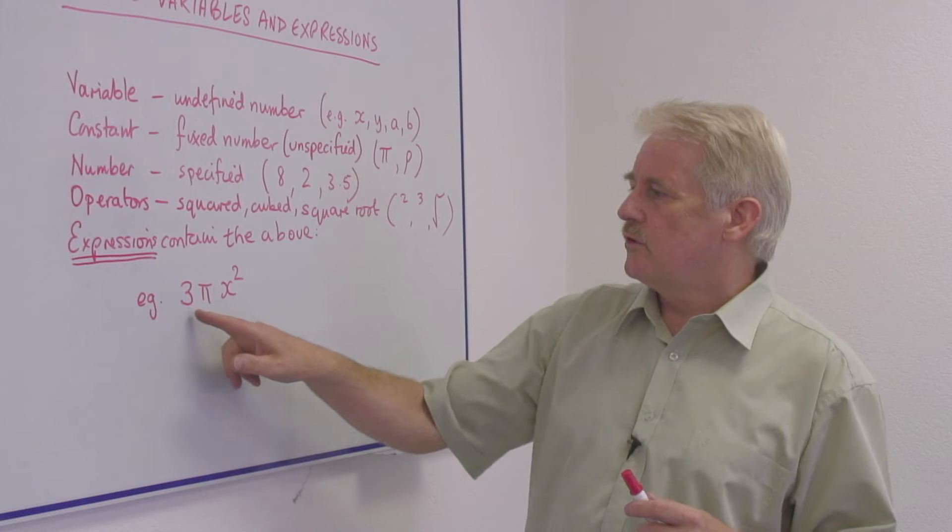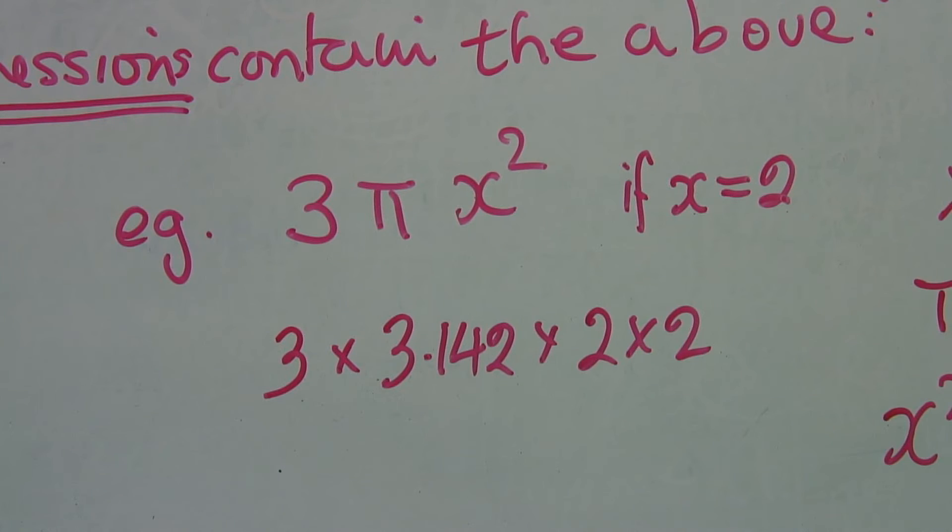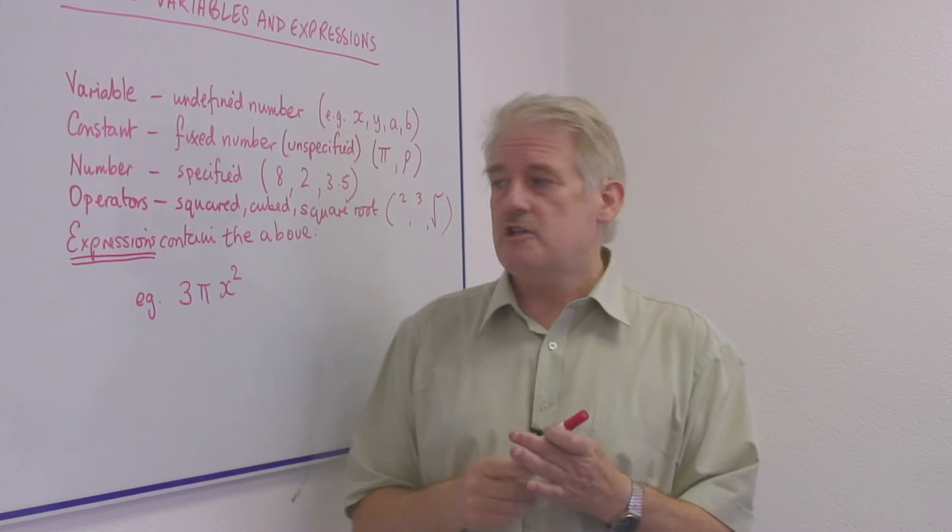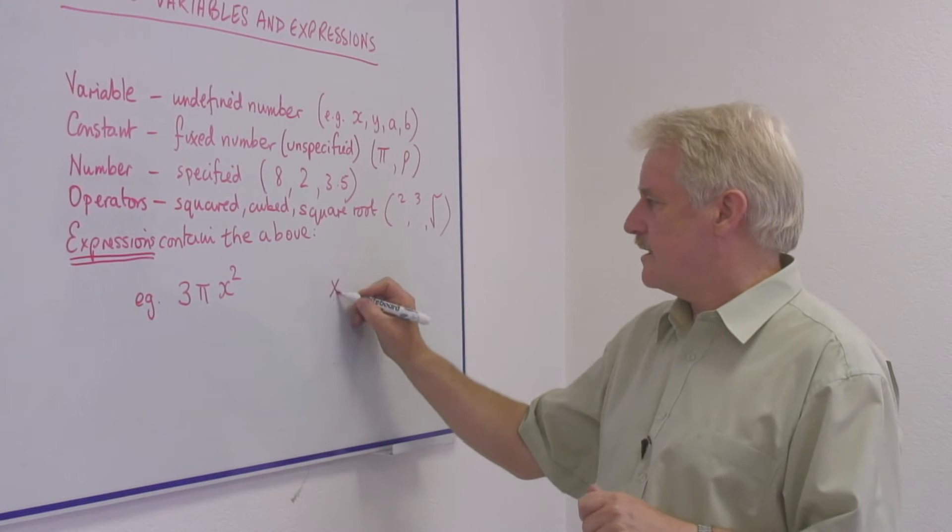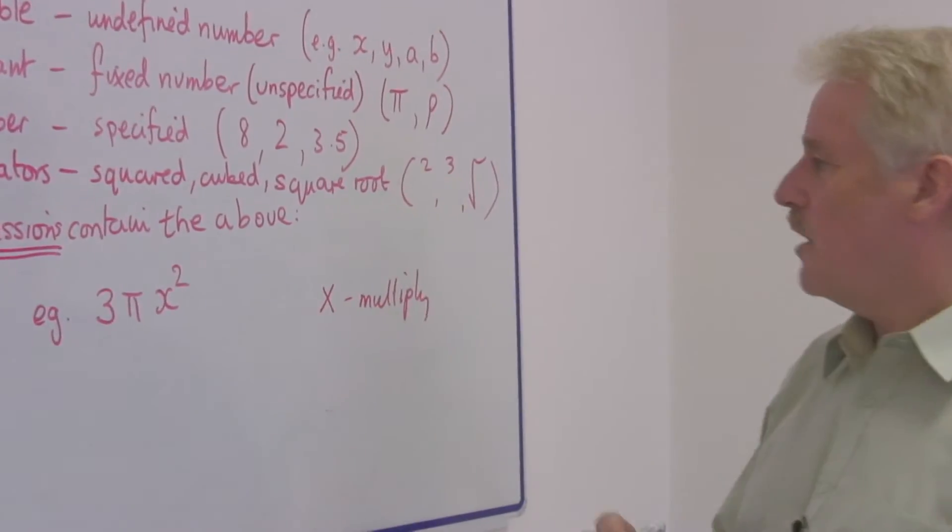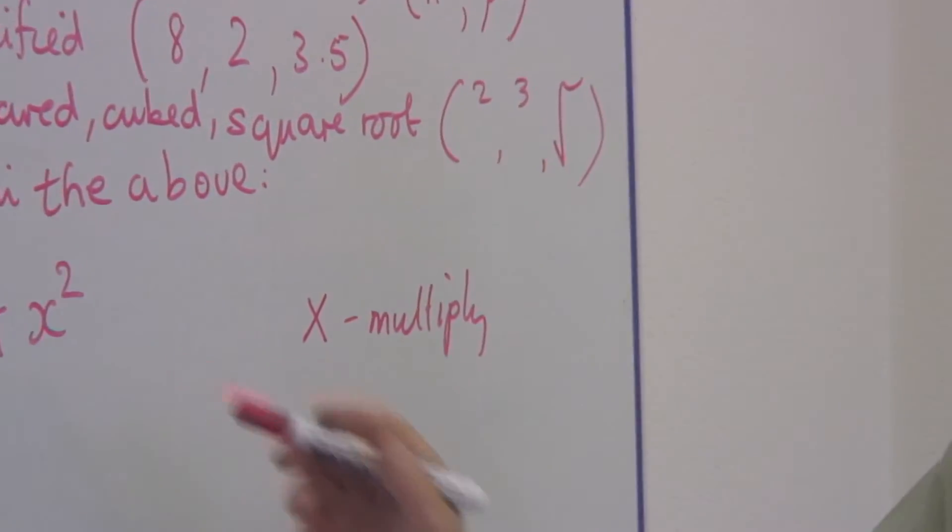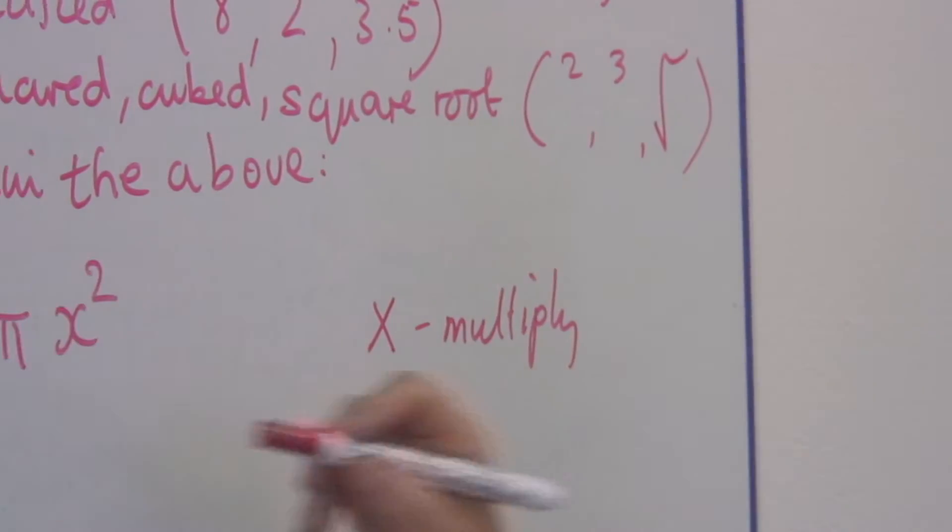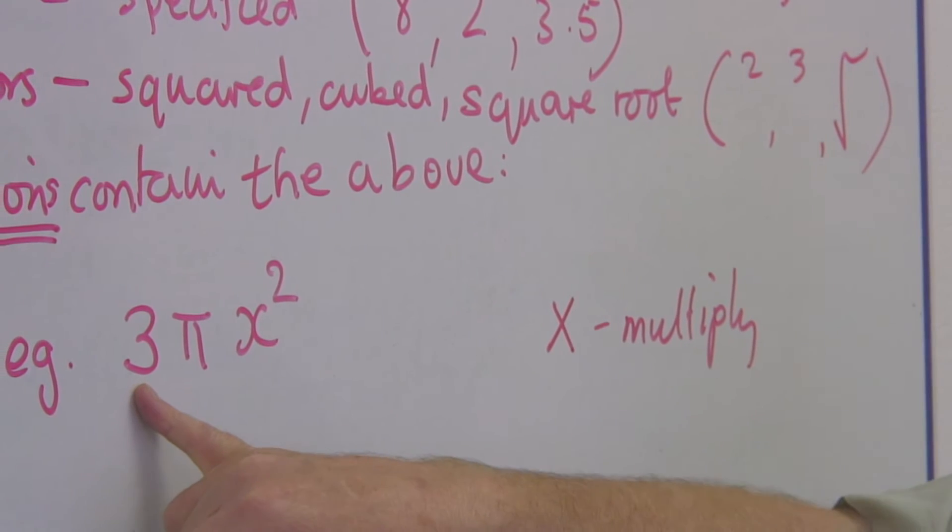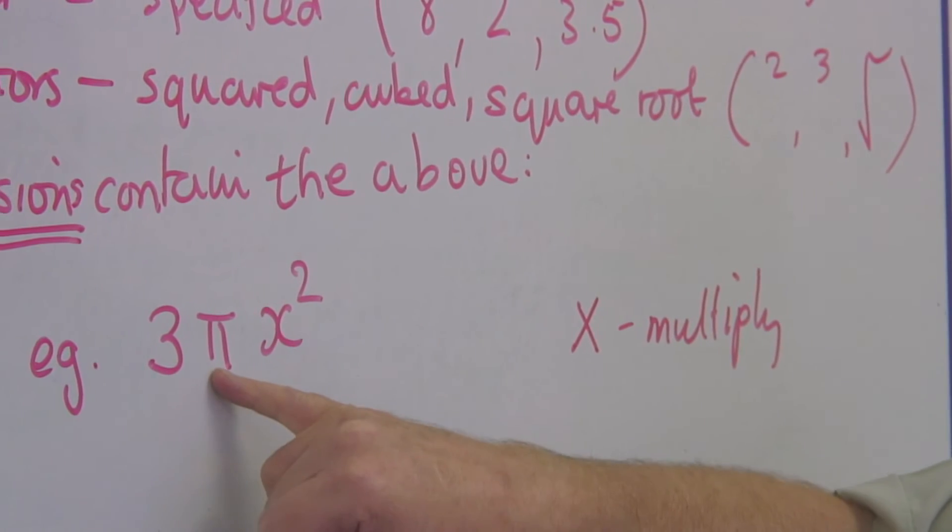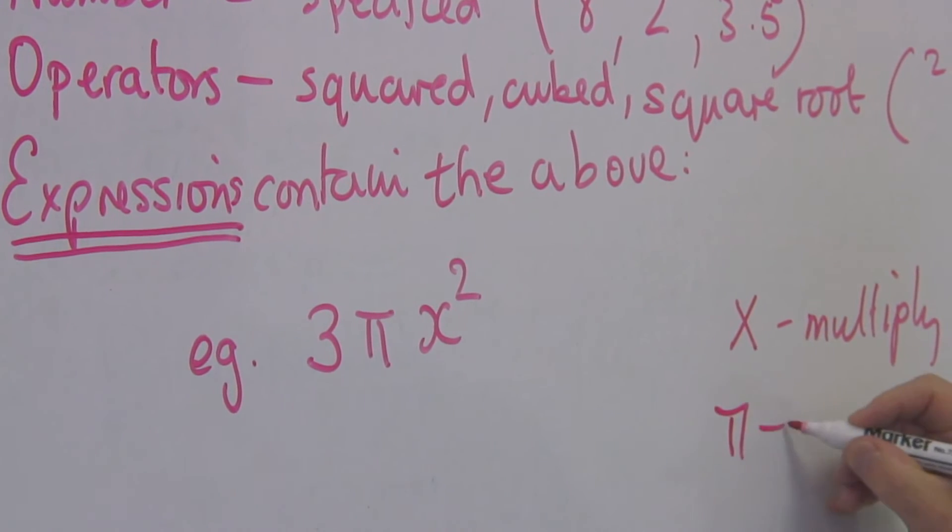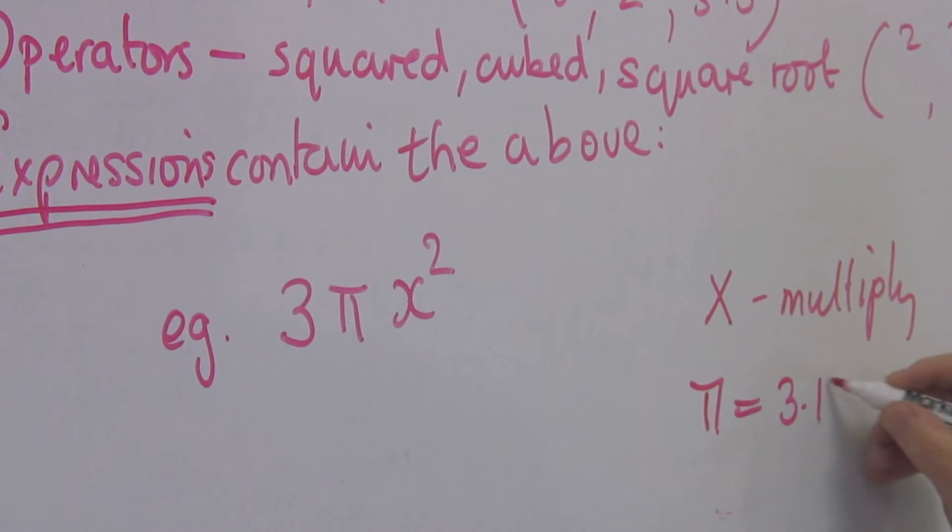For example, 3πx². You have to remember that the operator for multiply, this operator, the times, which is multiply—in algebra, we don't put in. So we don't put 3 times pi times x squared. This means simply the number 3 multiplied by the number pi. We know pi is 3.142.